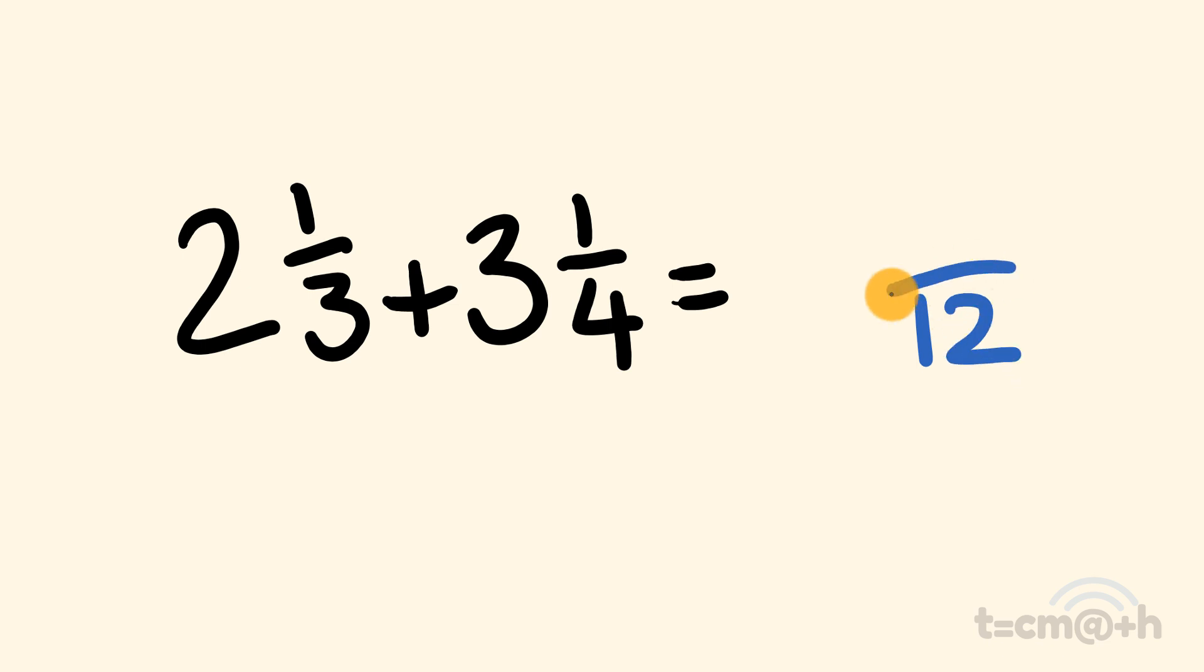Next, what we're going to do is we're going to cross multiply each numerator with the other denominator. So we have one times four, which is equal to four. And we have one times three, which is equal to three. We're going to add these together. So four plus three is equal to seven.